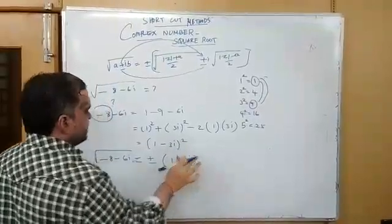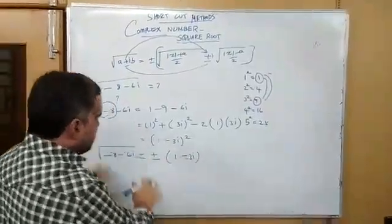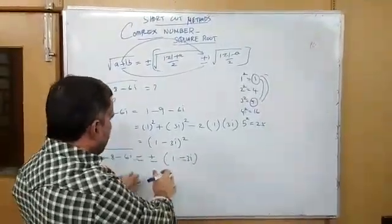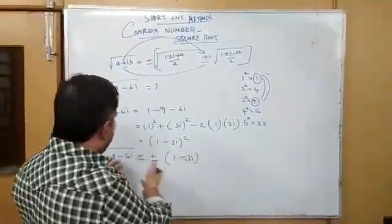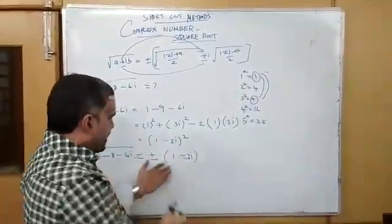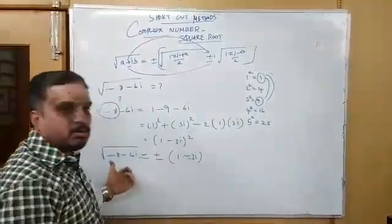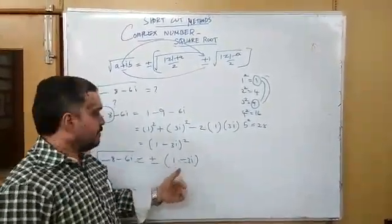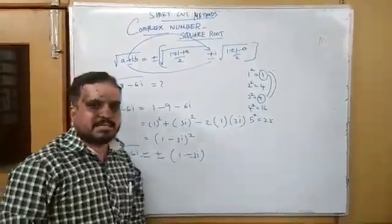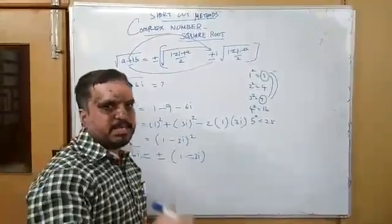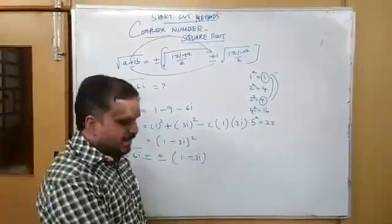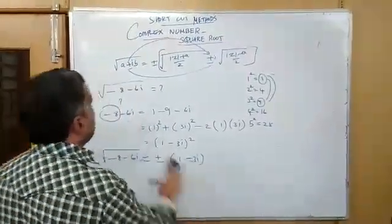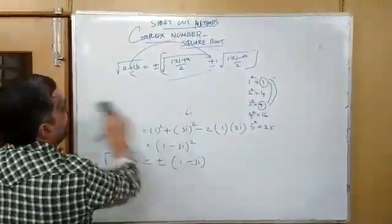In this way, we get the result. This is another method. The square root of minus 8 minus 6i is equal to plus or minus (1 minus 3i). By using this method, we can find out another question.